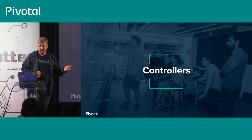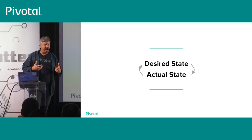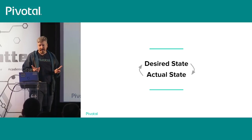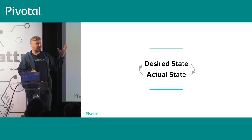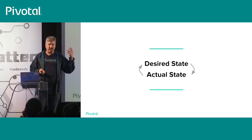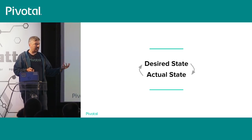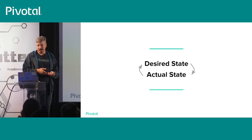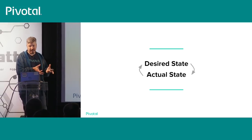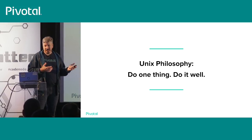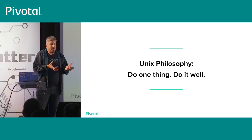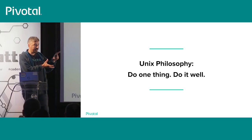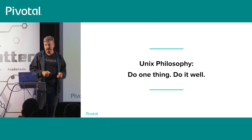Controllers are the underpinning that makes Kubernetes as good as it is. They're tiny control loops that make sure the state you've asked for is the state actually running in your cluster for a particular resource — following that Unix philosophy of picking one thing, doing it really well, and making them composable.